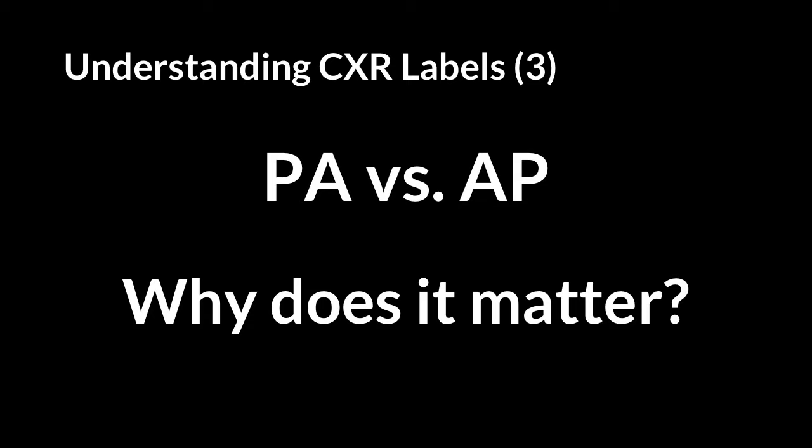The first L stands for lungs unilaterally — look at the right lung in isolation, then the left lung in isolation. Start at the right costophrenic angle and scan the right lung from bottom to top, then go to the left lung and scan down to the left costophrenic angle.